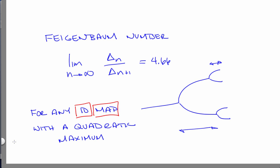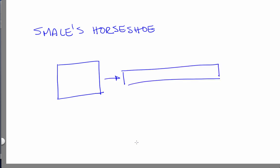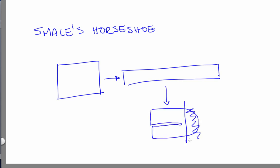Speaking of higher dimensional maps, here's an example of a 2-dimensional map. It's called Smale's Horseshoe. Smale's Horseshoe operates not on the unit interval like the logistic map, but on the unit square. The first thing it does is stretch out the square to be a long, thin rectangle with the same volume. The next action is to take that rectangle and fold it, then chop off the extra bits. So it's a map of the unit square onto itself, and it has the interesting property of taking points that are far apart and bringing them close together.